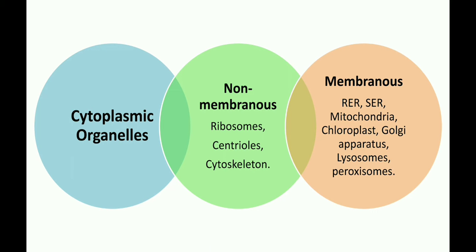Now we will see the different cytoplasmic organelles. They are divided into two categories on the basis of presence or absence of a membrane. Non-membranous organelles include ribosomes, centrioles, and cytoskeleton. Membranous organelles include rough endoplasmic reticulum (RER), smooth endoplasmic reticulum (SER), mitochondria, chloroplast, Golgi apparatus, lysosomes, and peroxisomes. We are going to learn all the organelles in detail one by one.